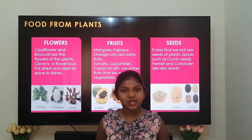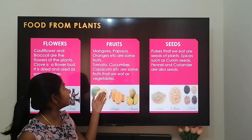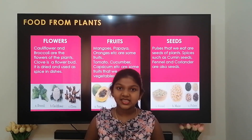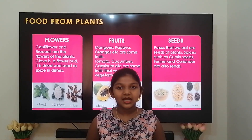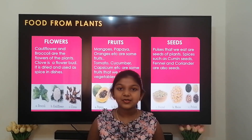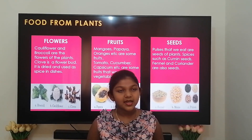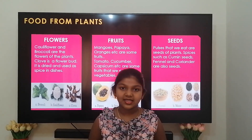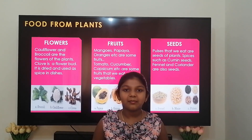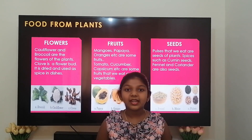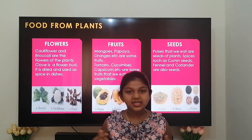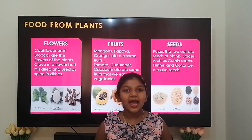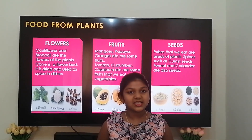Next are the fruits — mango, papaya, and apple are some of the fruits that we eat. Cucumber, capsicum, and tomato are some of the fruits that we eat as vegetables. Next are the seeds — pulses that we eat are also seeds. Mustard, fennel, and nutmeg are also seeds. Many cooking oils are obtained from seeds. For example, mustard oil is obtained from mustard seeds and sesame oil is obtained from sesame seeds.